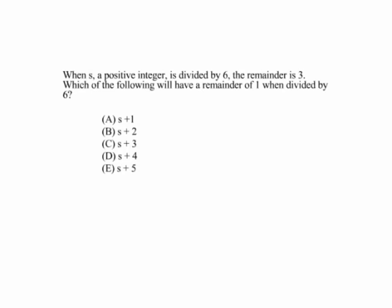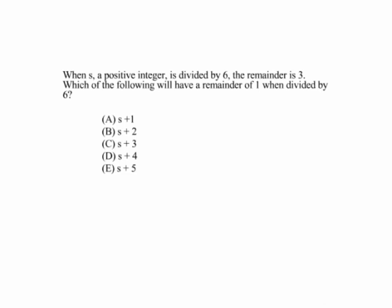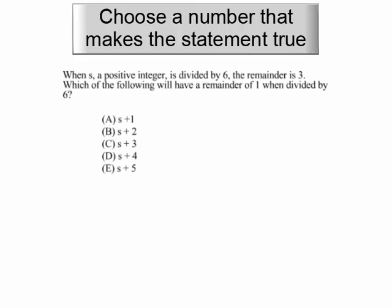Here we have a remainder problem. Remember that a remainder is a number that's left over when you divide one number by another. In this case, s is divided by 6 and leaves a remainder of 3. Which of the following will have a remainder of 1 when divided by 6? Let's choose a number that makes the statement true. If you divide 9 by 6, 6 goes one time and leaves a remainder of 3.